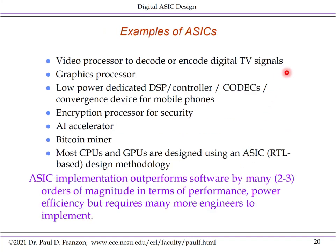Here are some examples of ASICs. Your set-top box has a video processor designed to decode and encode digital TV signals. Your video camera has a similar unit. Your cell phone has an ASIC on the central processor, which includes a dedicated video processor. Some fixed-function graphics processors are also ASICs. Dedicated units for signal processing of a particular nature, or a codec — encoder and decoder — are also ASICs.